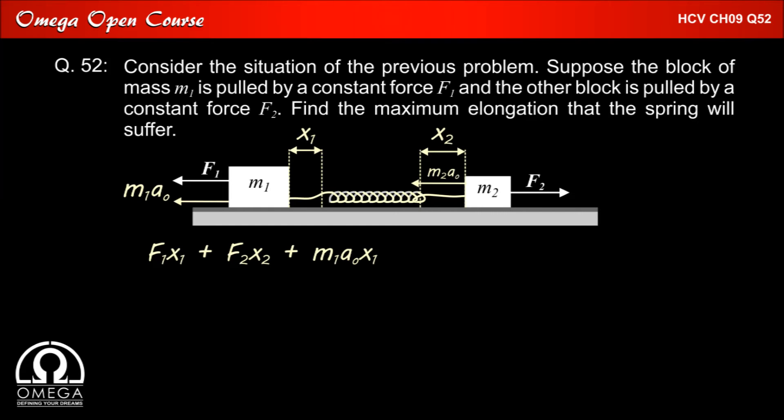Work done by pseudo force on M1 that is M1 A0 is equal to M1 A0 x1 as block M1 is displaced by distance x1 towards M1 A0. The work done by pseudo force M2 A0 is minus M2 A0 x2 because the displacement x2 is opposite to the direction of force M2 A0. So this is the net work done by all the four forces and this work must be equal to the spring potential energy that is half K x0 whole square. Now we have seen that M1 x1 is equal to M2 x2 therefore M1 A0 x1 must be equal to M2 A0 x2 and therefore the work done by both the pseudo forces cancel each other out and our expression becomes F1 x1 plus F2 x2 is equal to half K x0 whole square.